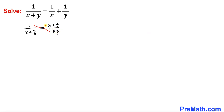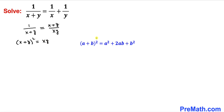Now let's cross multiply. So (x plus y) times (x plus y) gives us (x plus y) whole squared, equal to x times y. Now let's recall the identity: (a plus b) whole squared equals a squared plus 2ab plus b squared. Applying it on the left hand side gives x squared plus 2xy plus y squared equals xy.